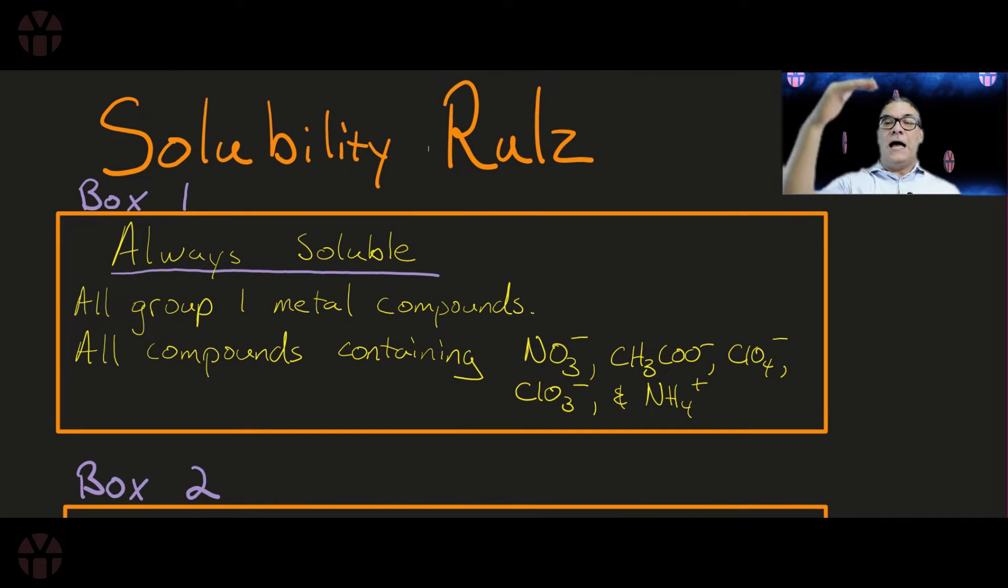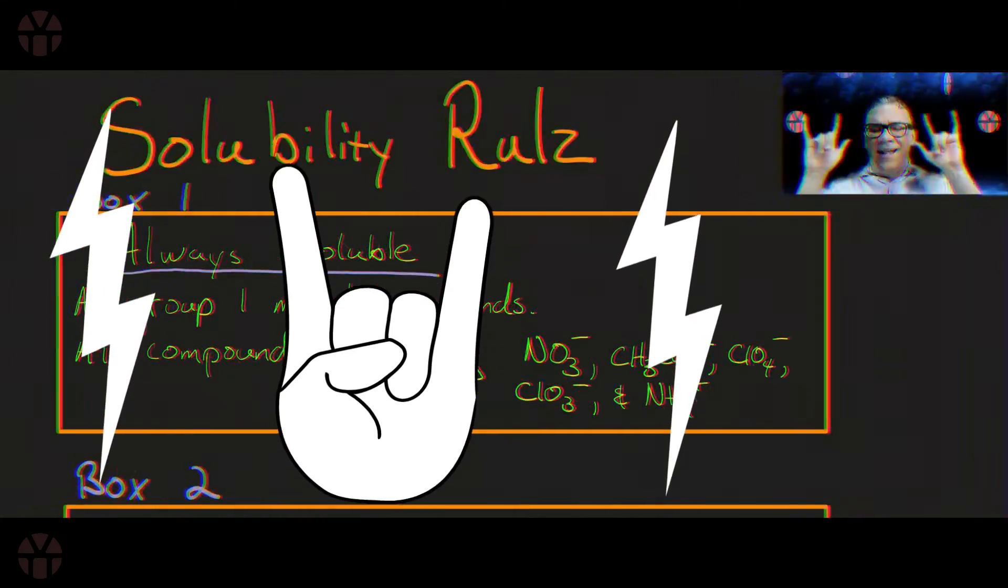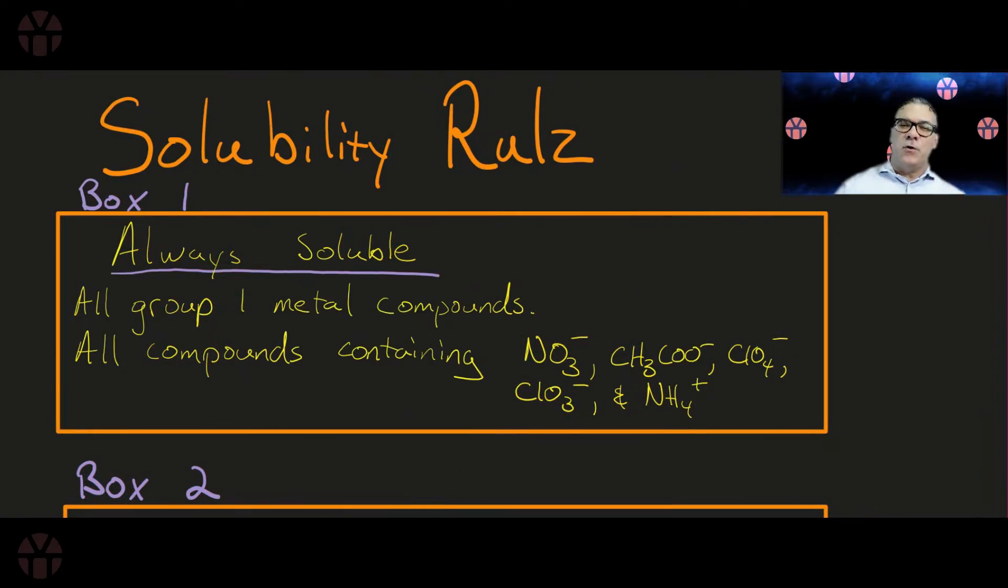Now just like we did with nomenclature, I'm going to help you by creating a series of boxes. And if you treat these boxes just like we did before in a higher hierarchical order - in other words, Box 1 will overtake Box 2 - as long as you do it in that hierarchy and follow it, I promise this is as simplified a version of solubility rules that you're ever going to see.